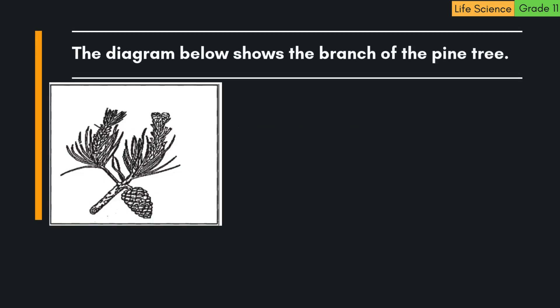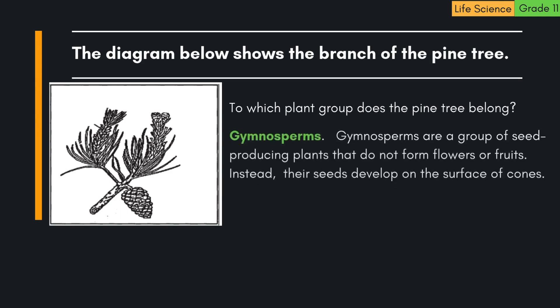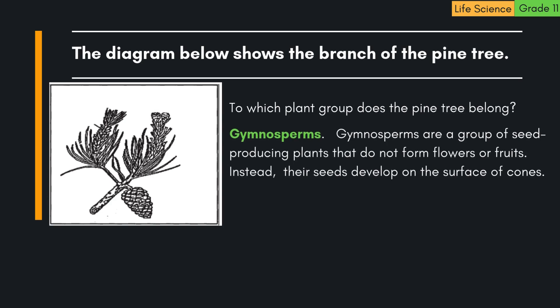The diagram below shows the branch of a pine tree. The pine tree belongs to the plant group gymnosperms. Gymnosperms are a group of seed-producing plants that do not form flowers or fruits. Instead, their seeds develop on the surface of cones.